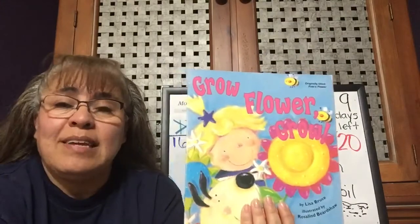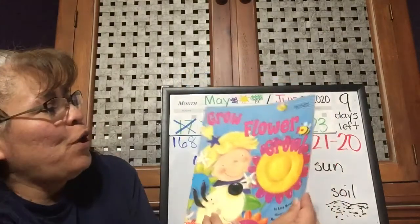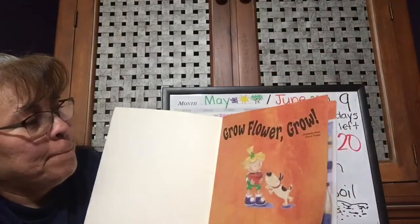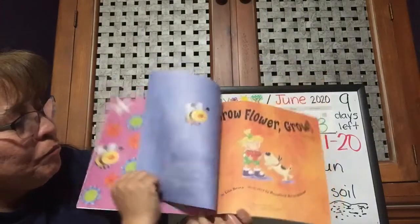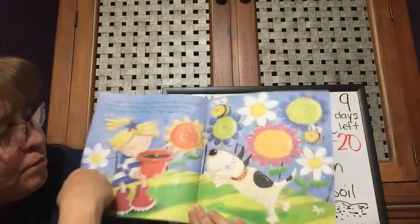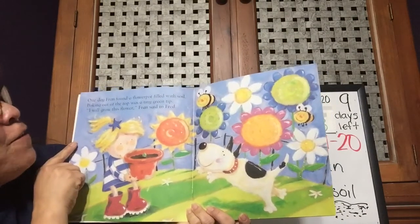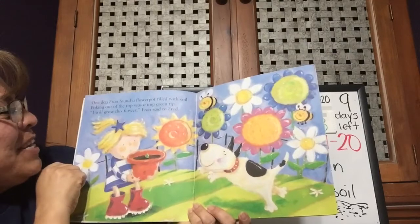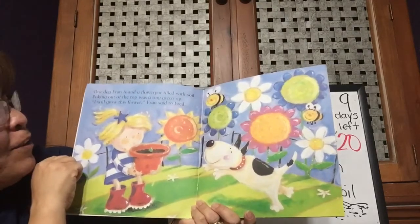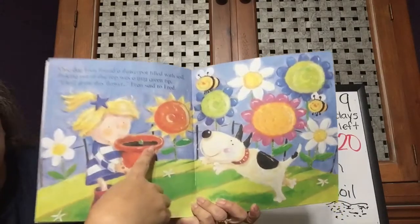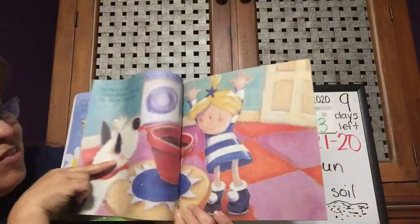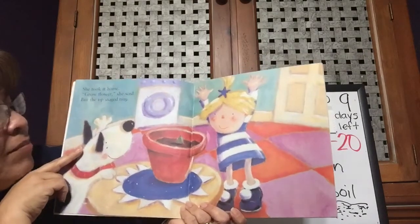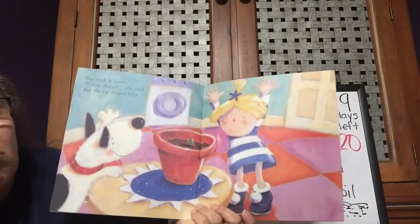All right, so we're talking about what plants need to grow. Let's read the story: 'Grow, Flower, Grow.' The author is Lisa Bruce, illustrator Rosalynn Burtshaw, and Scholastic gives us permission to read this story. One day, Fran found a flower pot filled with soil, and poking out of the top was a tiny green tip. 'I will grow this flower,' Fran said to Fred. She's going to help it grow. So she took it home. 'Grow, Flower,' she said. But the tip stayed tiny — it didn't grow.